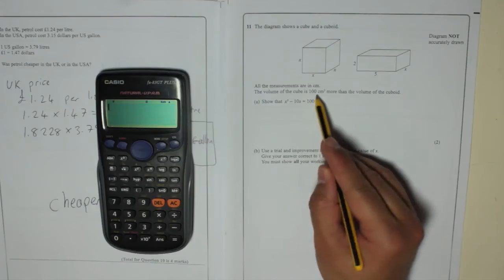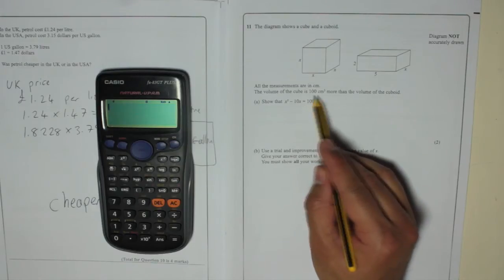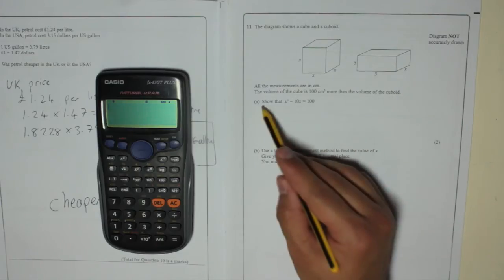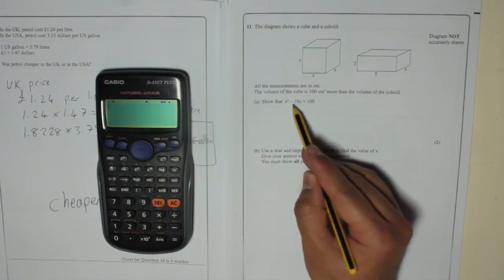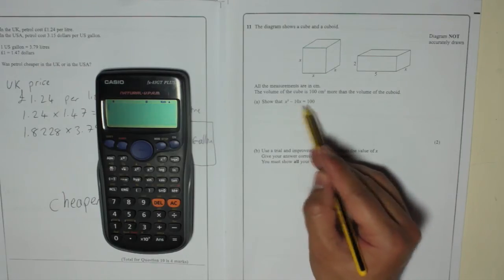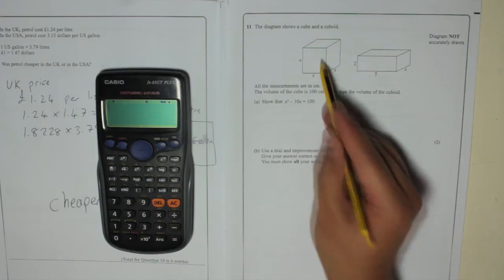All the measurements are in centimeters. The volume of the cube is 100 centimeters cubed more than the volume of the cuboid. Show that X cubed minus 10X equals 100. You might be reading that thinking, how am I meant to show that? Well, obviously you've got to use these things.